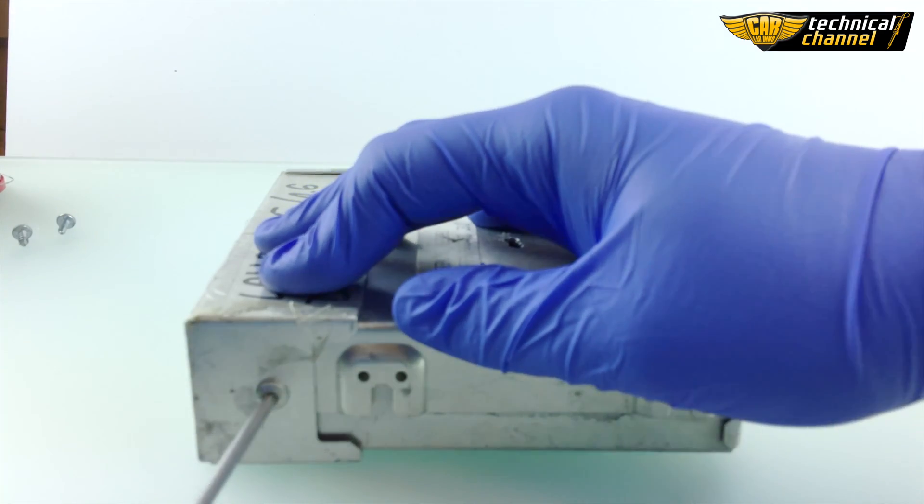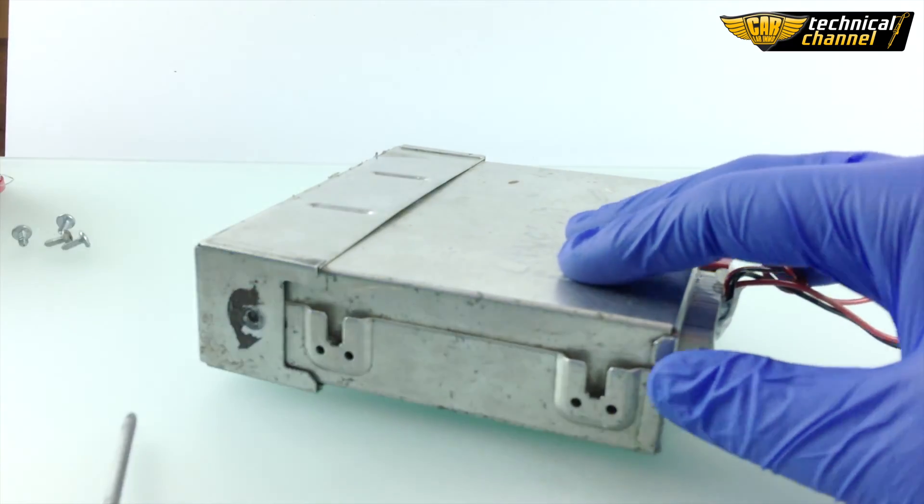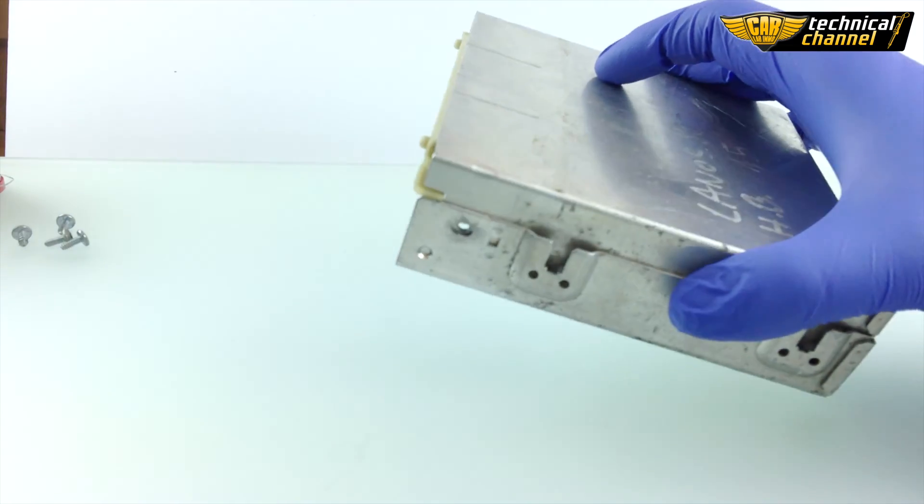Firstly we have to unscrew the ECU housing and remove the ECU from it. We need a Torx screwdriver to open it.